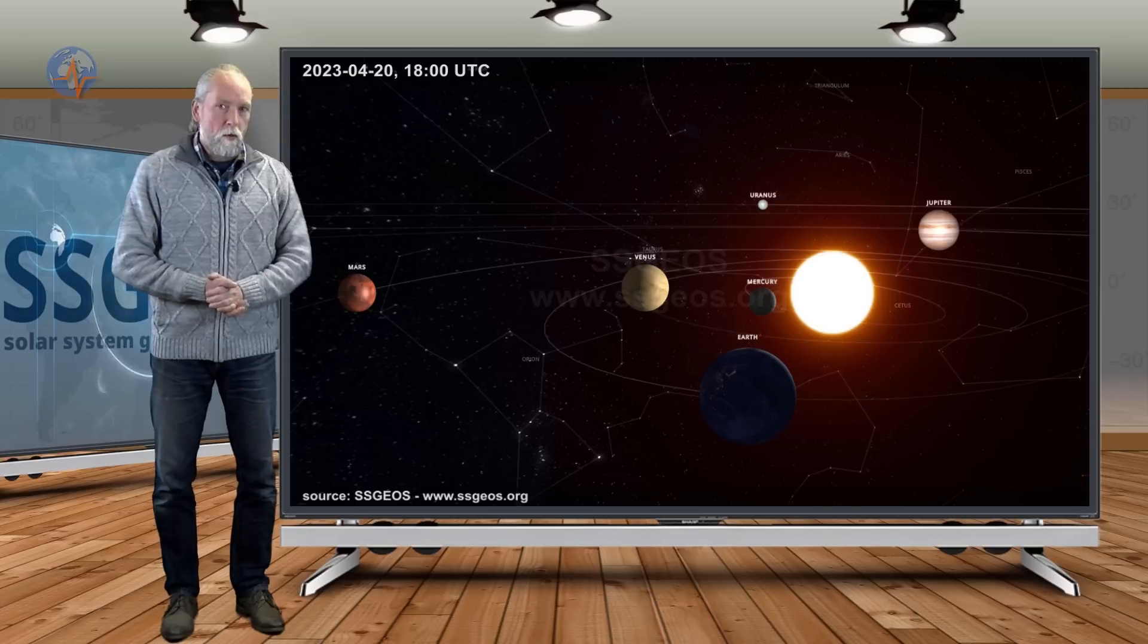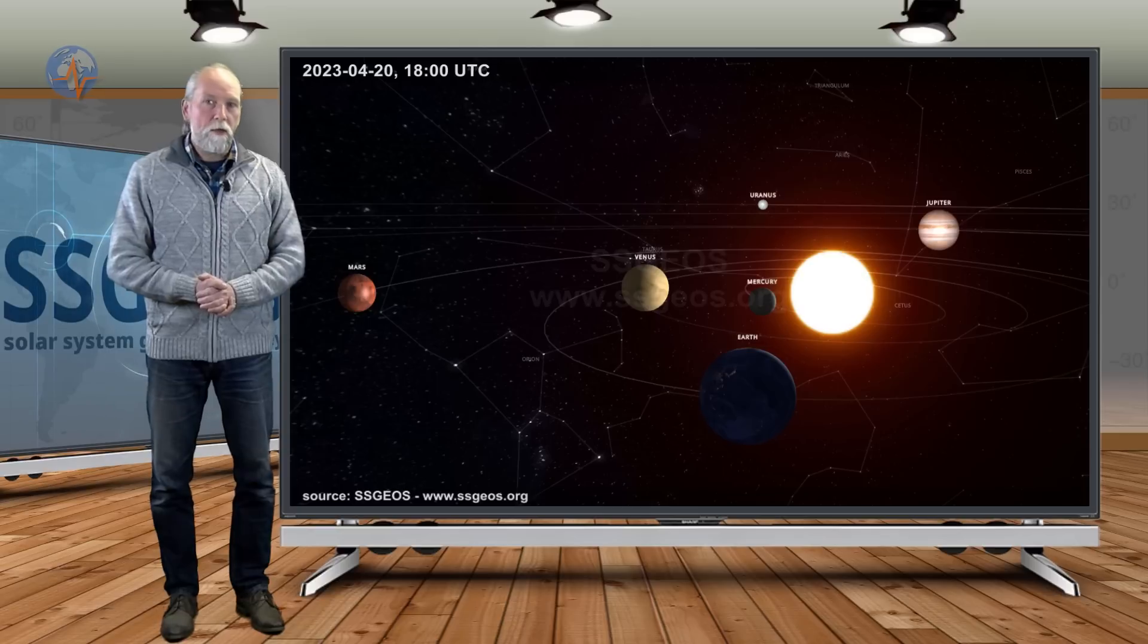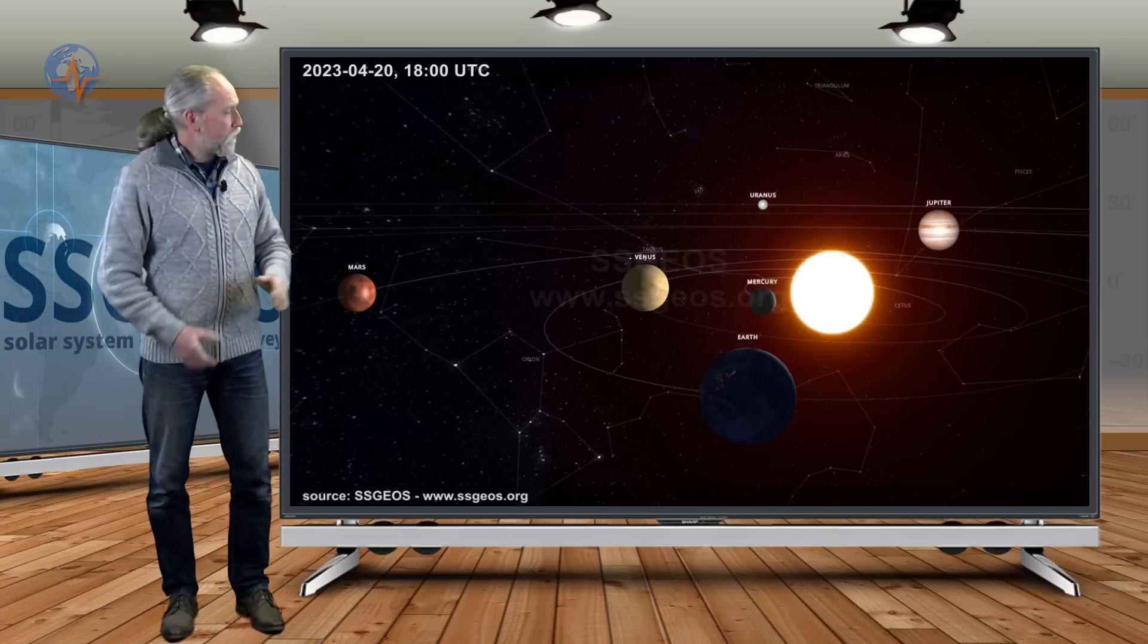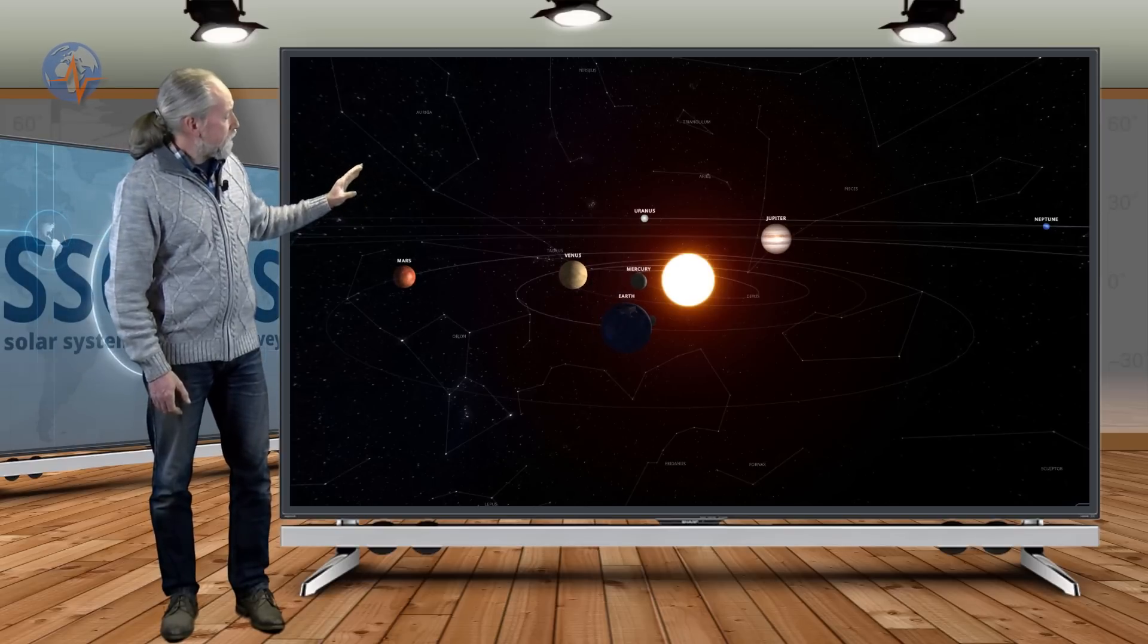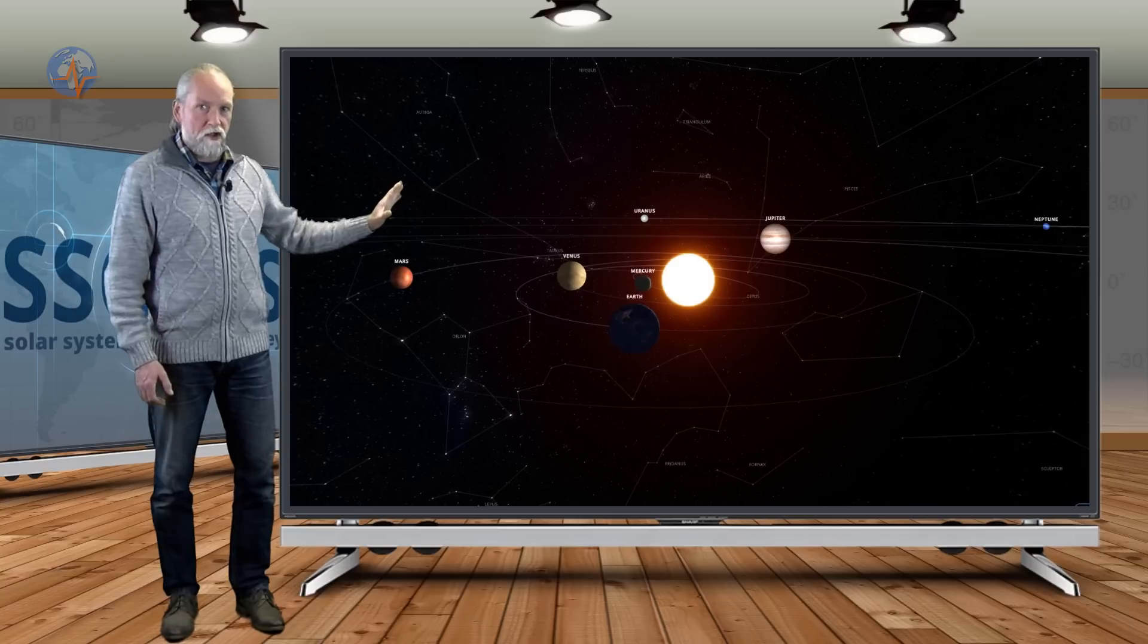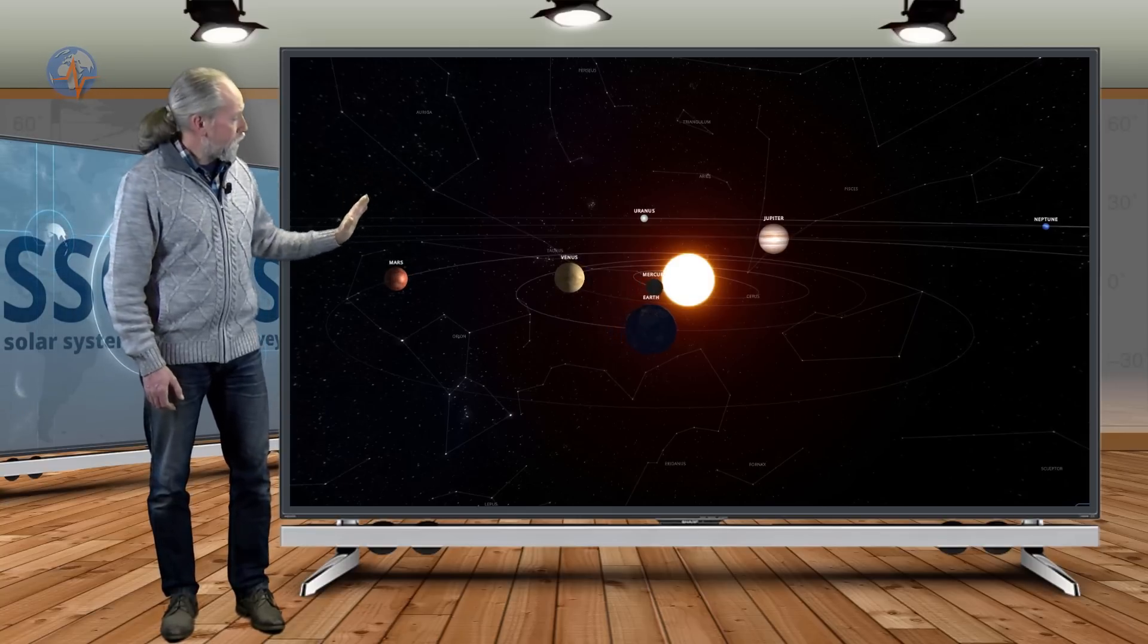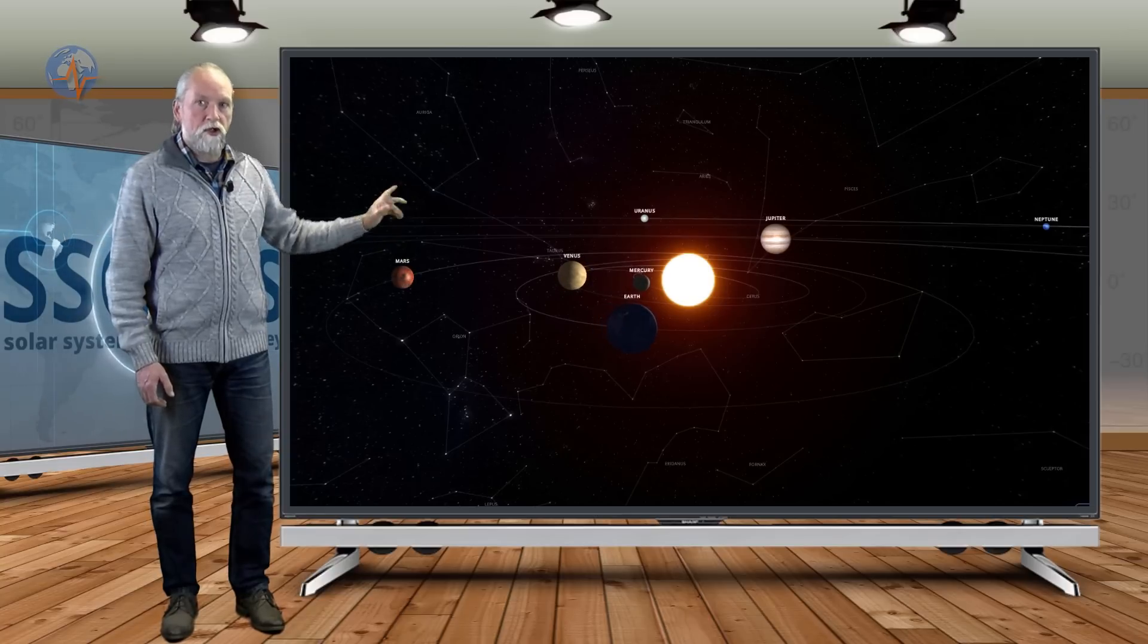That was closest yesterday night around 1800 UTC at 2 degrees 14 minutes. It doesn't come closer than that. But if you look at the animation here that I prepared, we see that both planets move in the same direction. Mercury slightly ahead and slightly faster and Earth also.